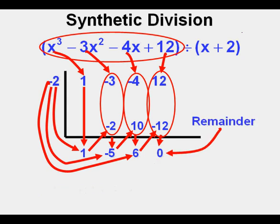This last number 0 is the remainder. If this were some other number than 0, the remainder we would write it down, that number over the divisor, quantity x plus 2.